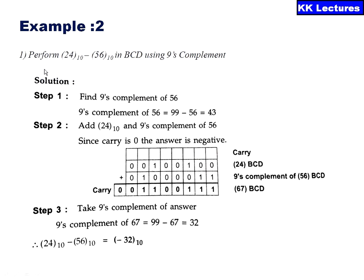Now example two: 24 minus 56, which should give a negative number. Finding the 9's complement of 56: 99 minus 56 equals 43. Now adding 24 and 43 in BCD: 24 is expressed as digit 2 and digit 4, and the 9's complement 43 is expressed as digit 4 and digit 3. Adding them gives 67 with no carry generated. Since no carry is generated, the result is negative, so we take the 9's complement of 67, which is 32. The final result is minus 32.